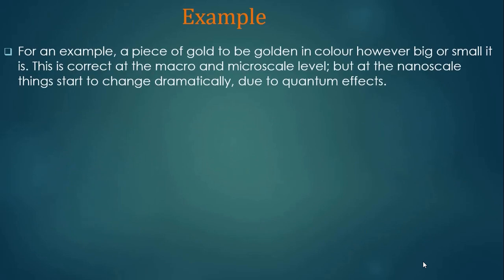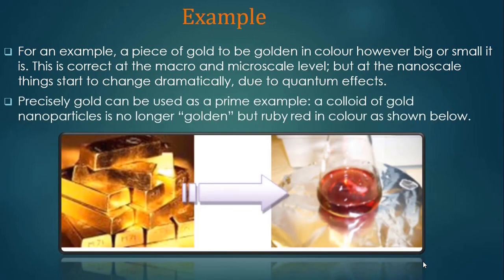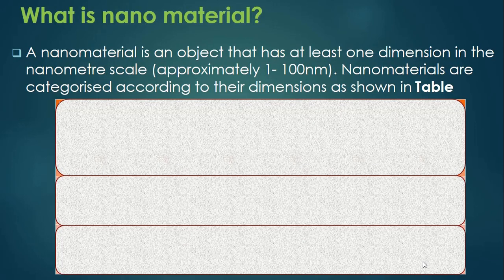Let's take the example of gold. Naturally, gold should be golden in color, whether big or small — and this is correct at macroscale and microscale. But at the nanoscale, things change dramatically due to quantum effects. When you form a colloid of gold nanoparticles, it looks ruby red, not gold. The size at which a material shows drastically different properties following quantum mechanics principles is the nanomaterial size — normally around 100 nanometers, and in some special cases up to 200 nanometers.